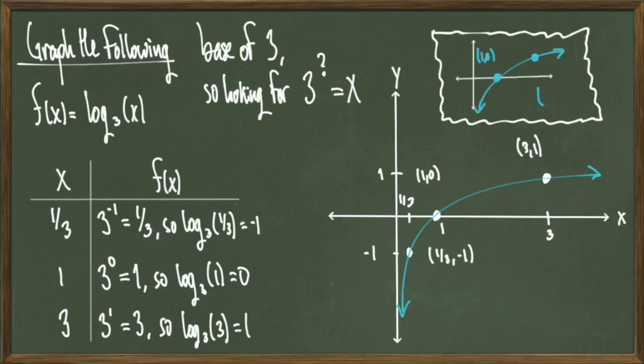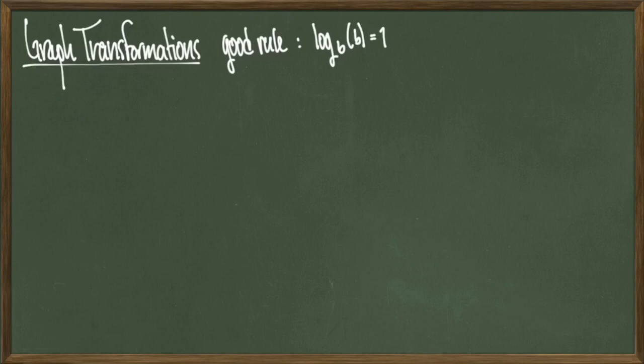Like with exponential functions, sometimes drawing the generic picture is a good idea, and all you'll need is two pieces of information. Let's look at some graph transformations. Also, a good rule of thumb to think about is that log base b of b is always equal to the number 1. This always gives us an easy point in our logarithmic graphs to calculate.